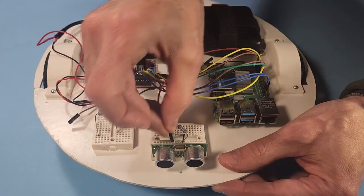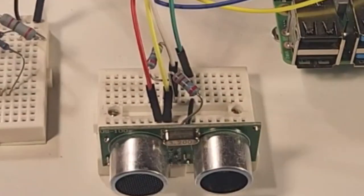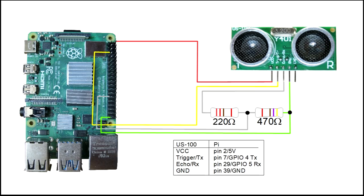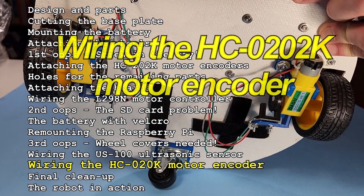Next I wire up the US100 ultrasonic sensor to the Raspberry Pi. The resistors on the breadboard make up a voltage divider circuit. That's needed because the US100's echo pin can put out up to 5 volts, and the Pi's GPIO pins can handle only around 3.3 volts. The voltage divider circuit lowers the voltage.